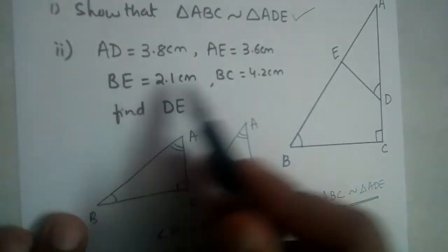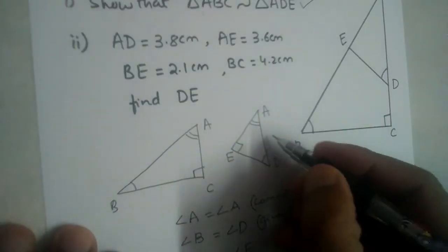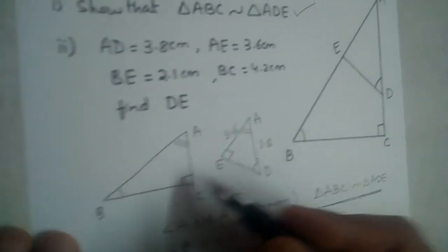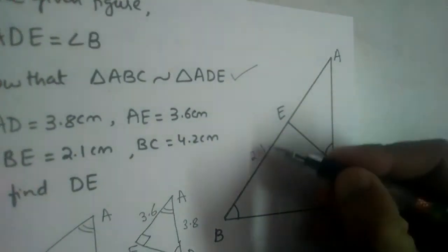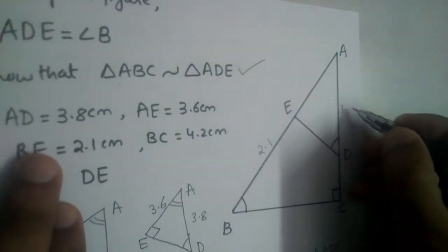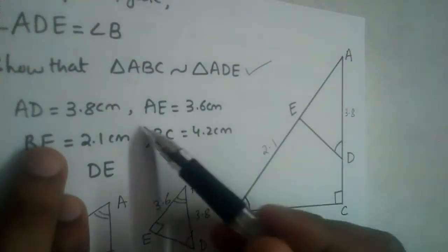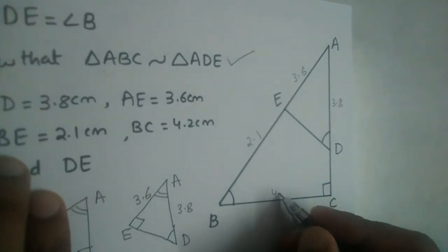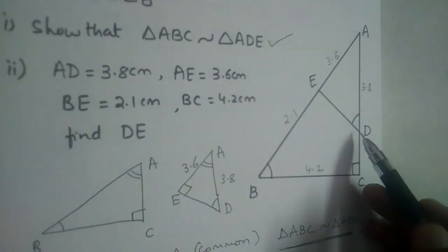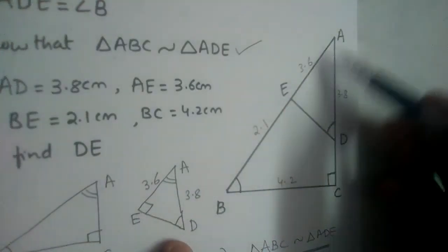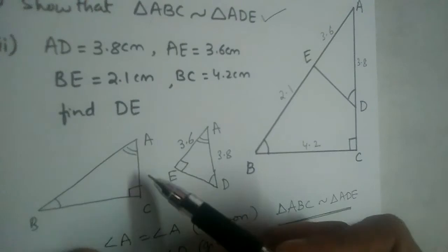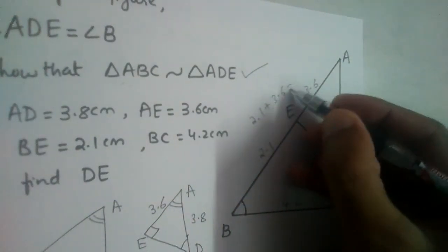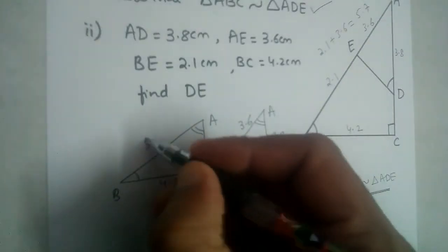Now let us solve part two. AD, AE, BE and BC are given. AD is 3.8, AE is 3.6, BE is 2.1, and BC is 4.2 cm. Let us write the lengths in the diagram. We need to find DE. Now, AB equals AE plus BE, which is 3.6 plus 2.1, so AB is 5.7.